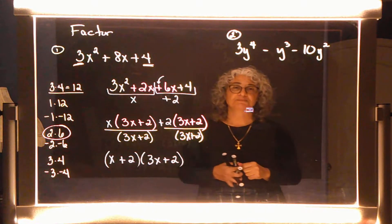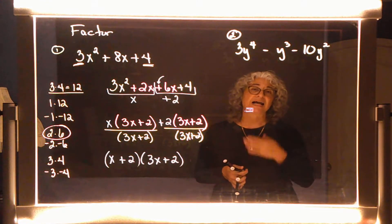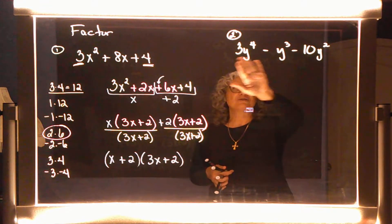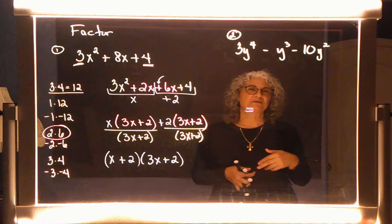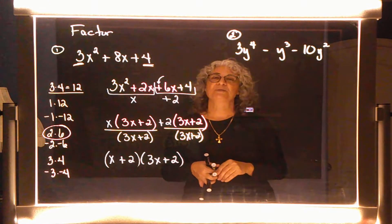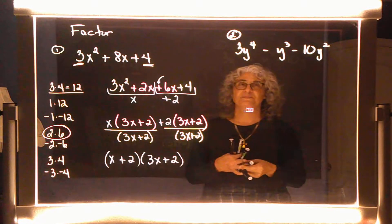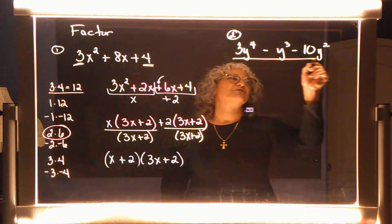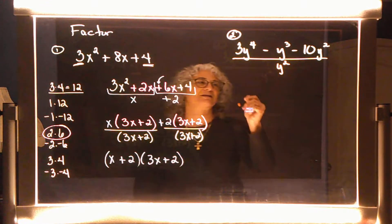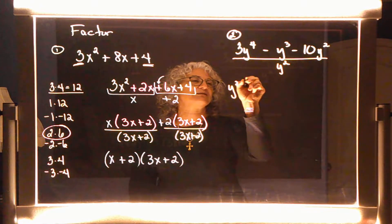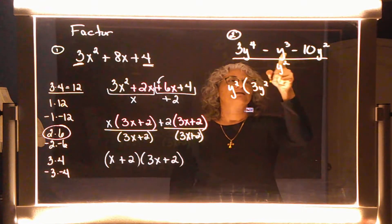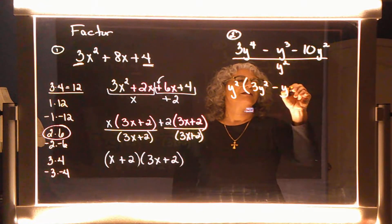Let's look at the second problem. Remember, first step first — if possible, we're going to try to reduce by dividing out of all three terms a number and/or a variable. Is there a number that goes into all three? Nope. A variable? Yes — all three can be divided by y to the second power. When I take out that y squared, what remains is a 3y squared, a minus y, and a minus 10.